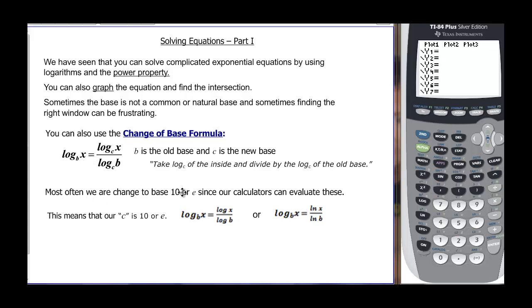Most often we're going to change to base ten or base e, so we can evaluate it in our calculators. That means that c, that new base, is going to be the common log, ten, which would then say we're going to take log base b of x to log x divided by log b. Or, we're going to take it to the natural log, or the natural number e, so we take log base b of x to ln x divided by ln b.